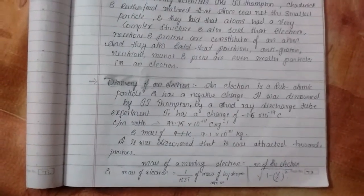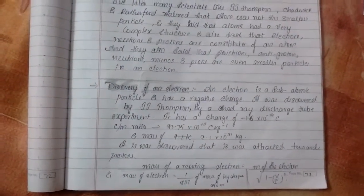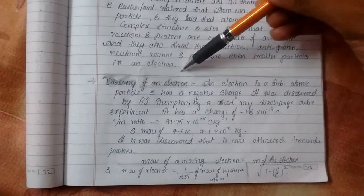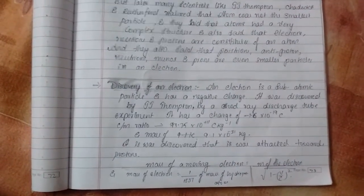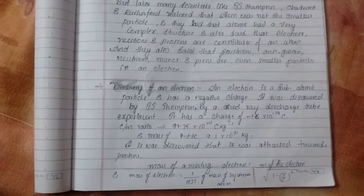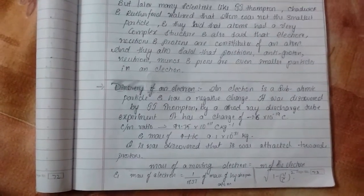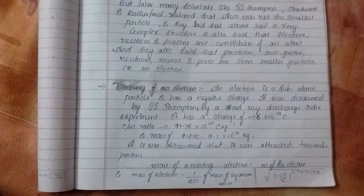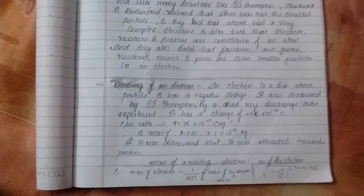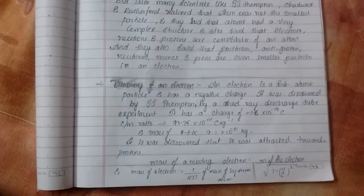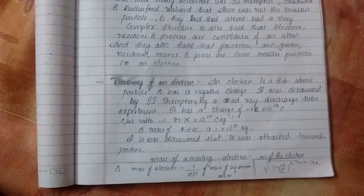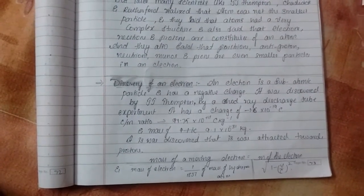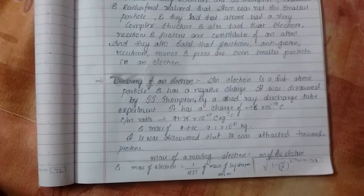And then, to prove this, they discovered two main particles of the atom, that is the discovery of the electron. An electron is a subatomic particle of an atom and has a negative charge. It was discovered by J.J. Thomson by a cathode ray discharge tube experiment and it has a charge of minus 1.6 into 10 power minus 19 coulombs. Please note this, this is a very important point.